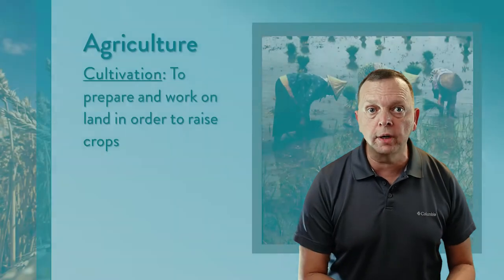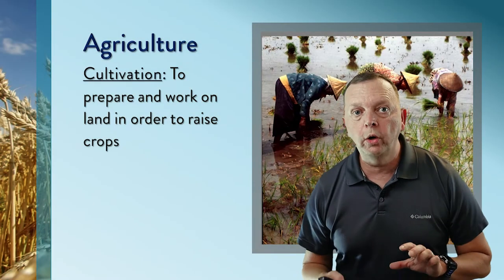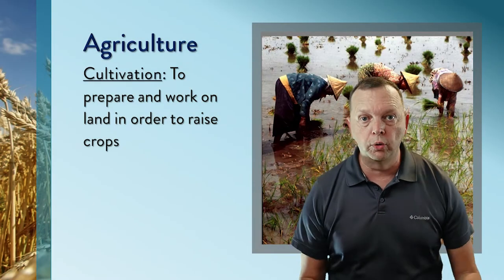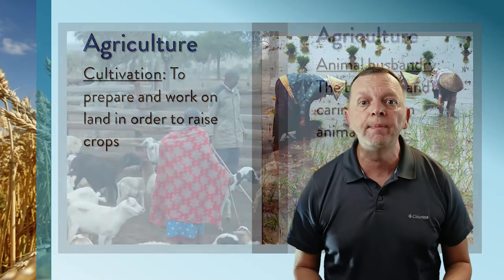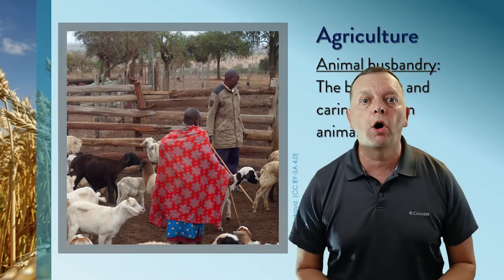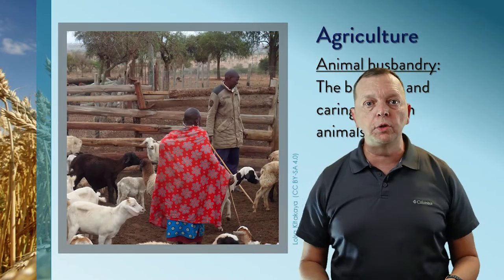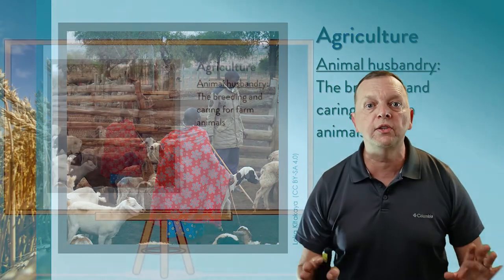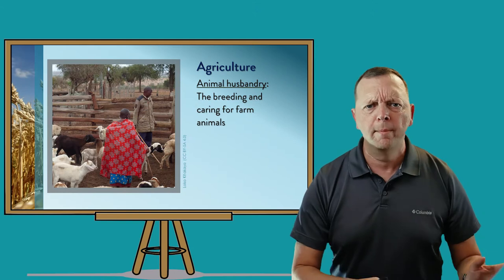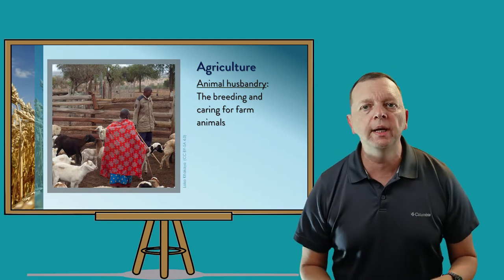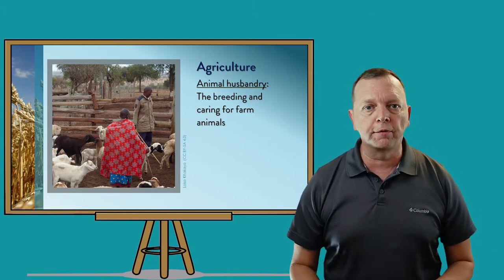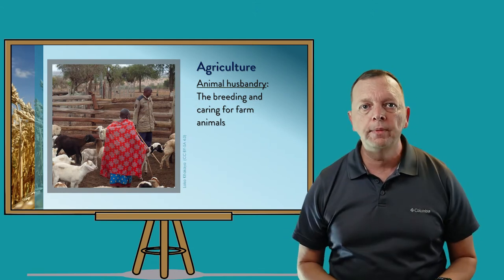The two parts of agriculture involve cultivation — this is preparing and working on land in order to raise crops, what we usually think of as farming — and then something called animal husbandry. Animal husbandry is simply the breeding and caring for farm animals.